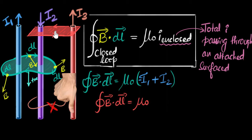And you may be wondering why should we attach a surface? We'll talk a little bit about that towards the end of the video. But the current that penetrates is I2 and I3. And now we need to know which direction is positive. For that, we use our right hand thumb rule.